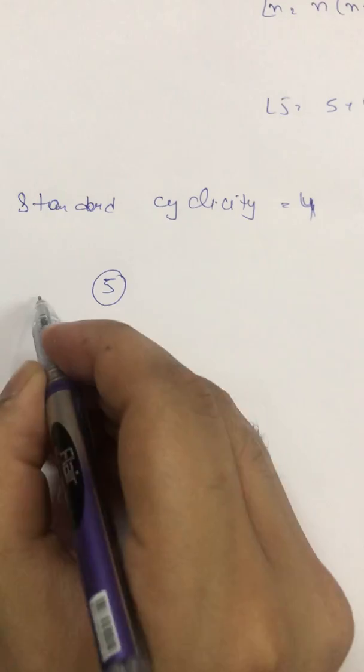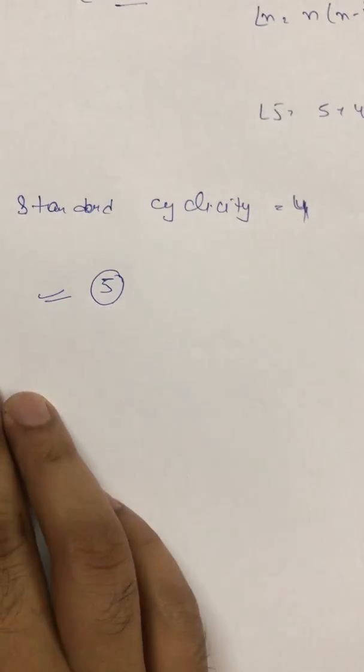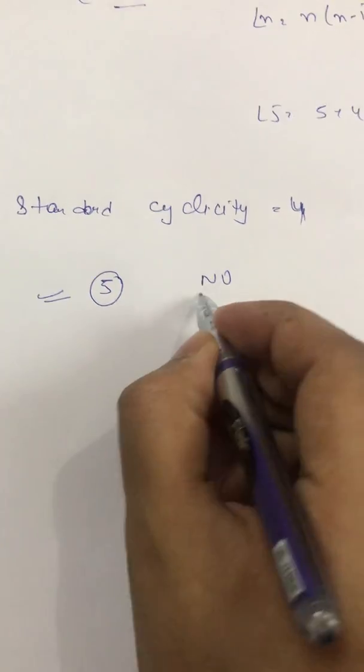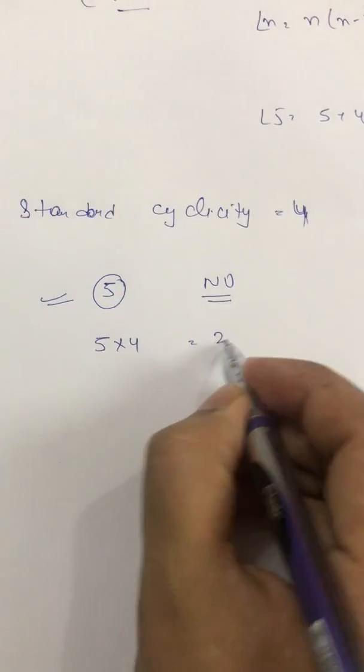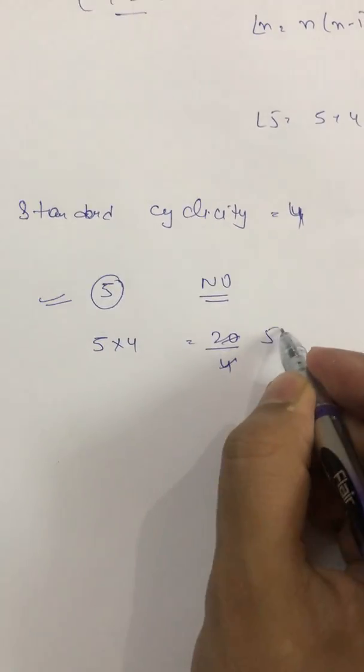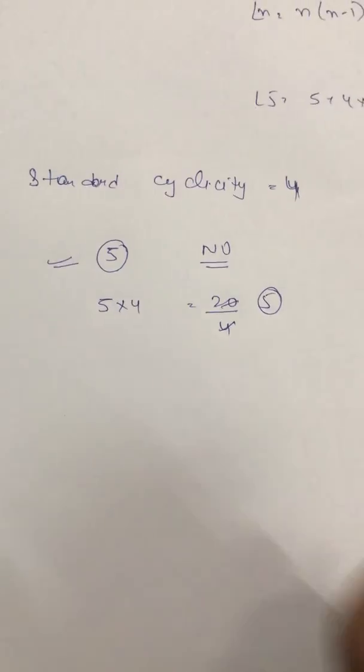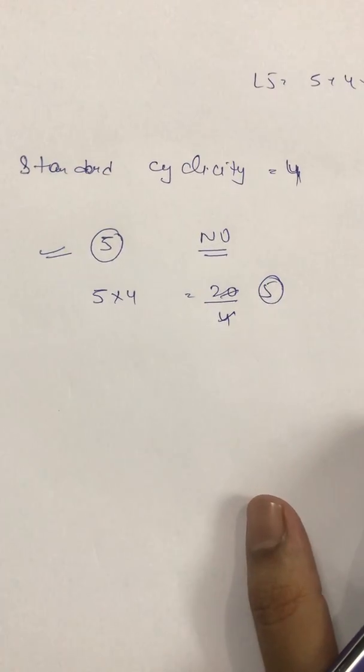Now, suppose if I say is 5 properly divided by 4? The answer will be no. But if I do 5 into 4, I will write here 20 and ask you, is 20 is properly divided by 4? You will say yes sir, it is properly divided by 4.